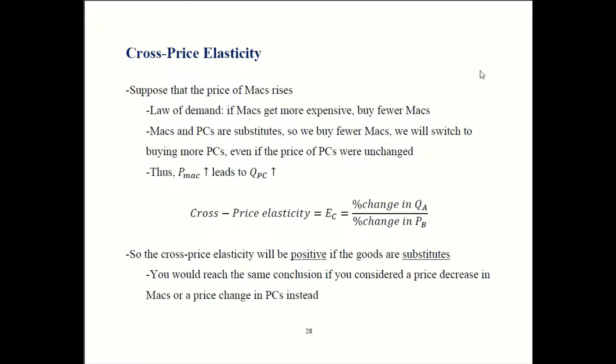Now Macs and PCs are substitutes. So I got to get a computer. It's got to be a Mac or it's got to be PC. If I'm buying fewer Macs, that means I'm more likely to be buying more PCs. So the quantity of PCs should rise. So first price of Macs goes up means buying fewer Macs. That leads to buying more PCs. So you get this positive relationship between the price of Macs and the quantity of PCs. So you plug it into this formula. You get a positive over a positive. So we get a positive number.